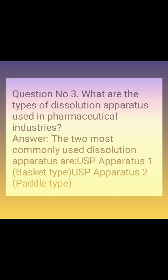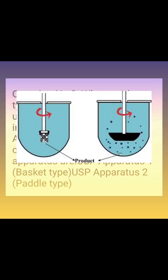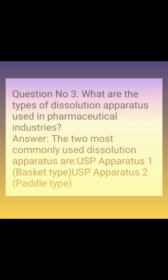Question number 3: What are the types of dissolution apparatus used in pharmaceutical industries? Answer: The two most commonly used dissolution apparatus are USP Apparatus 1 (basket type) and USP Apparatus 2 (paddle type).